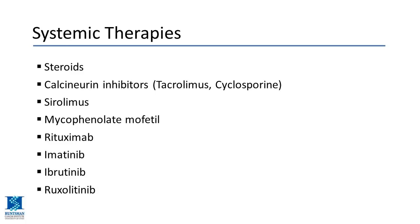For systemic therapy — either oral or intravenous — steroids remain the first-line agent, with approximately 50% of patients responding. For the other 50% who don't respond, a range of other agents is available. Many patients may still be on calcineurin inhibitors — tacrolimus or cyclosporine — and these may be restarted to boost the effect of steroids. The overall goal is to get patients off steroids as quickly as possible due to long-term side effects.